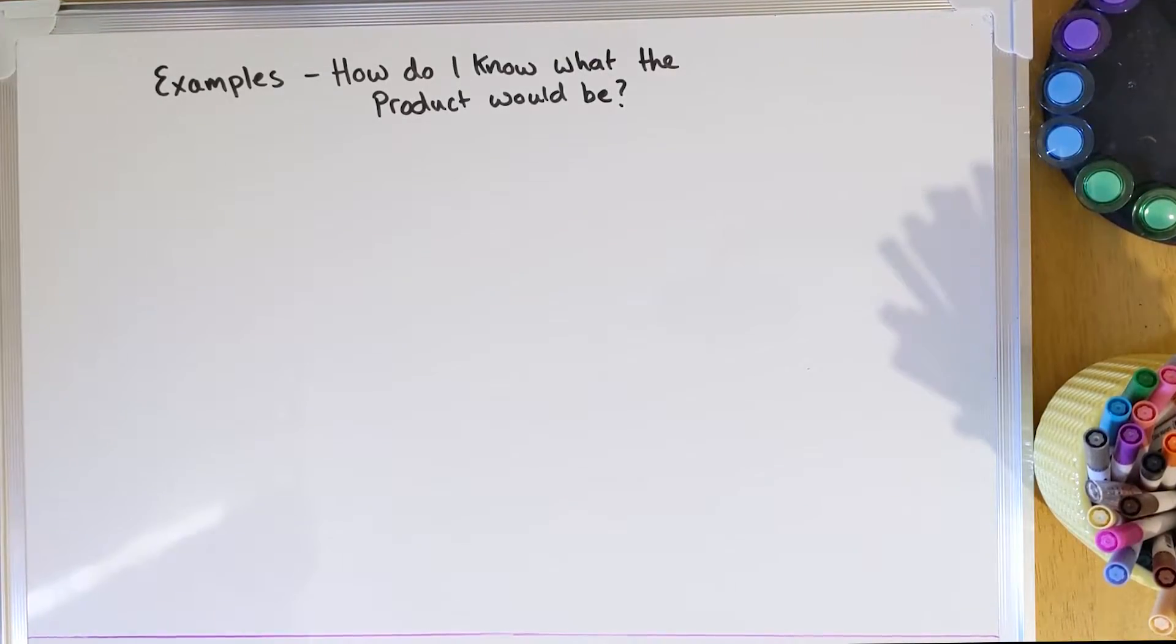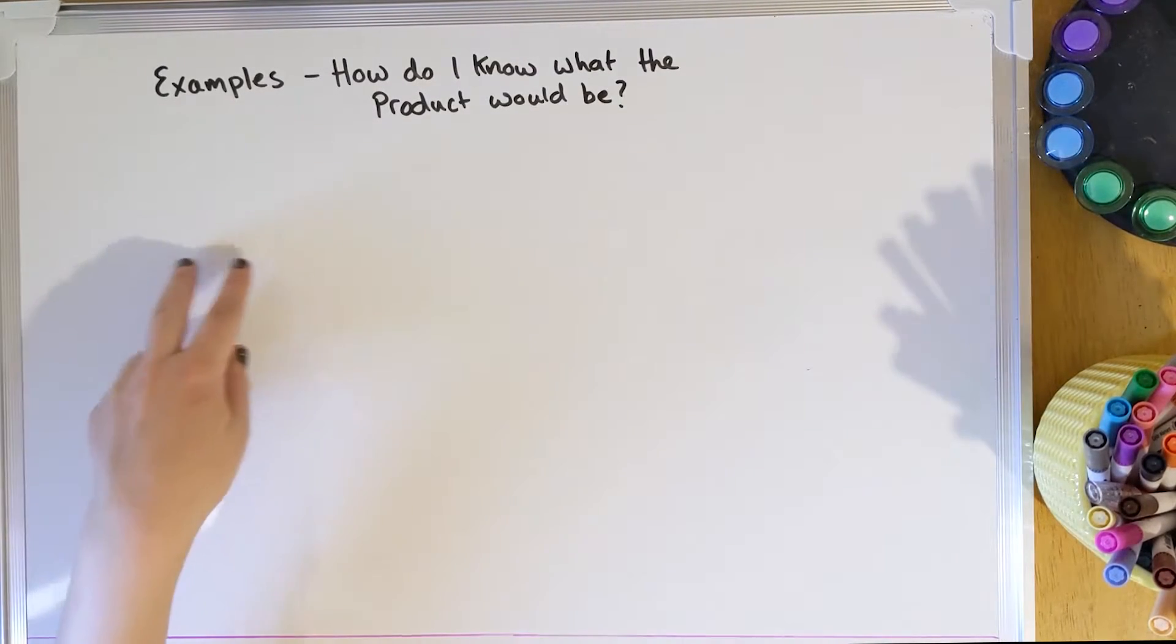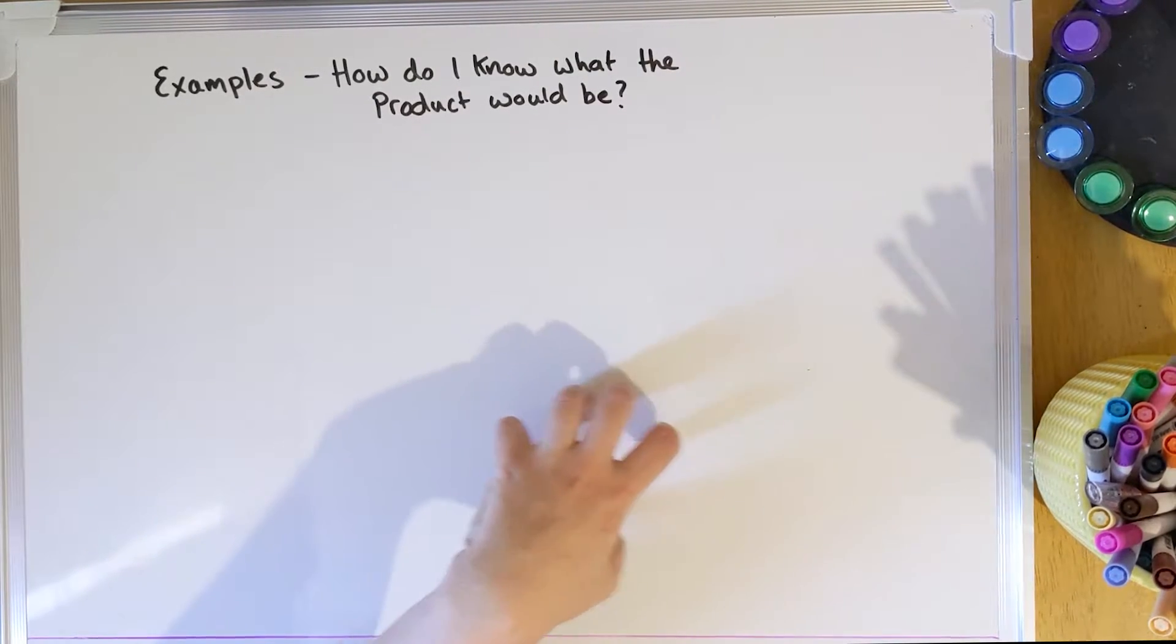What you'd hopefully be able to do in a test or in an exam later on in your school careers is to be able to work out what the product would be, so what would get made during a thermal decomposition. So we're going to start with putting the general formula at the top and then I'm going to list some different metal oxides and then we'll talk through how we work out what will get made.